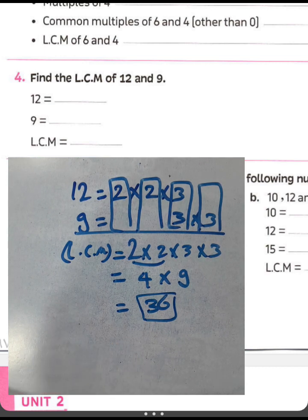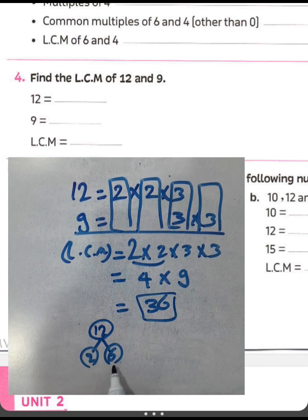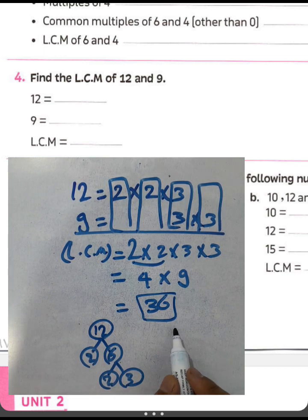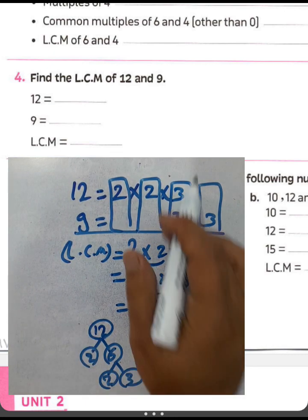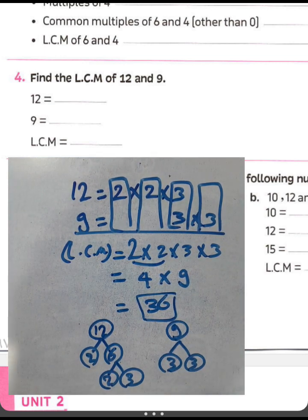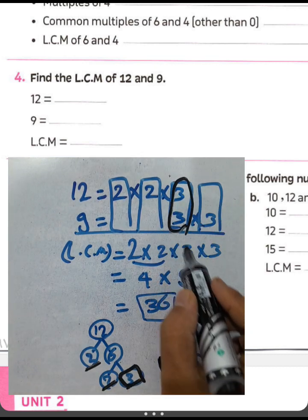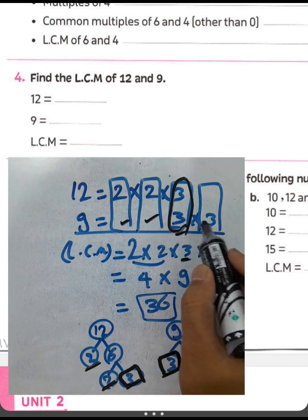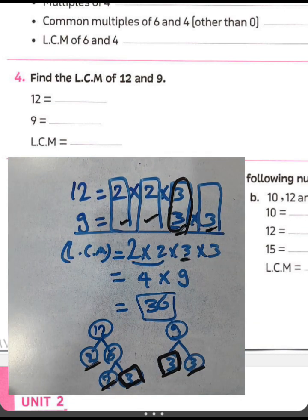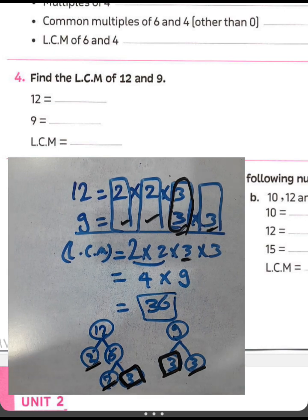You can use the factorization method: twelve equals two times six, and six equals two times three; nine equals three times three. Drawing circles around common prime factors: two and three for twelve, three and three for nine. The common factor between them is three. Write the remaining digits outside: two, two, three, and three. The least common multiple is twelve — wait, the result is thirty-six.